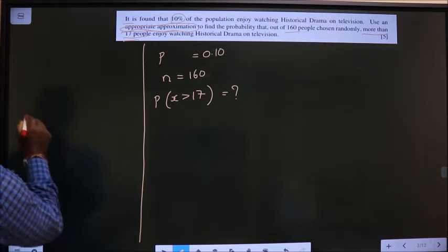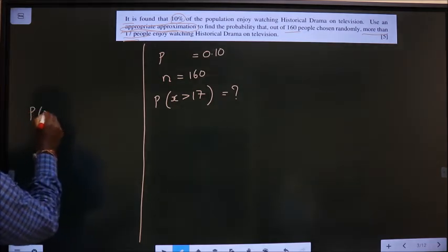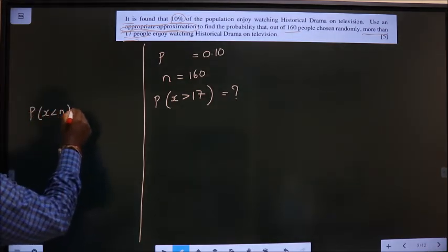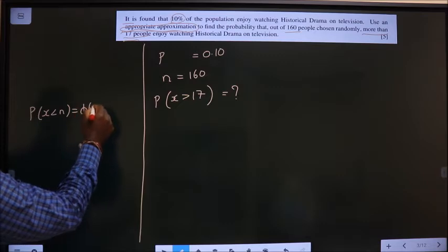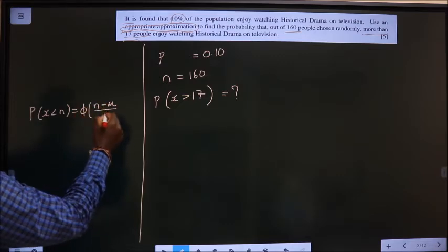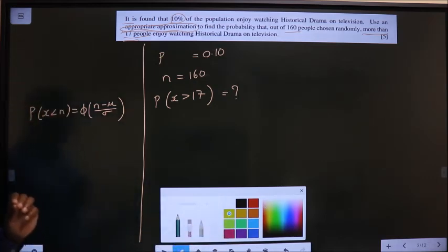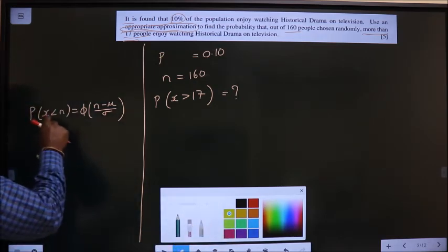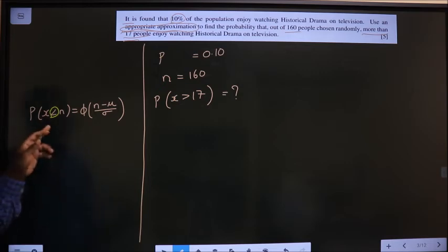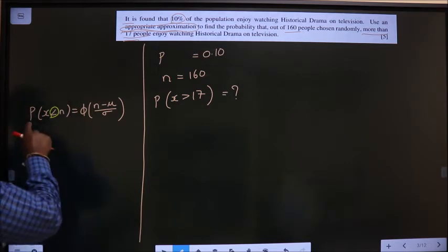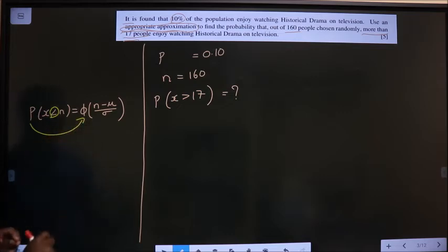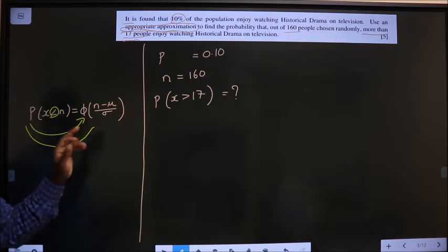That is P of x less than n is nothing but phi of n minus mean by standard deviation. Here you have to look out for this symbol. This should be less than always. Only then P will get converted to phi. The symbol should be less than, only then P will get converted to phi.